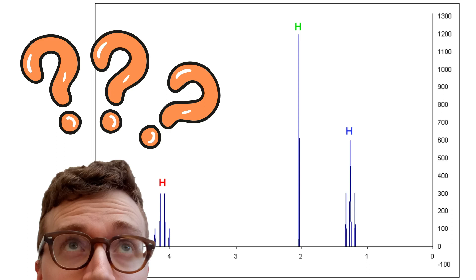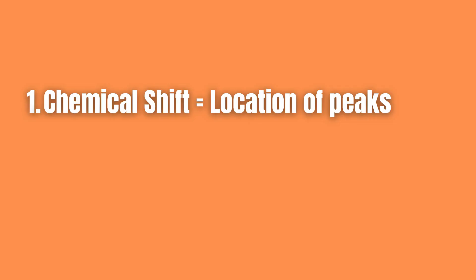When interpreting and drawing an NMR spectrum you want to consider three things. First is chemical shift which has to do with the location of the peak in the spectrum.